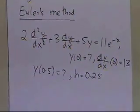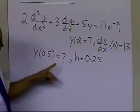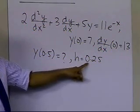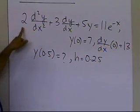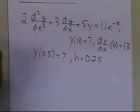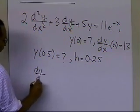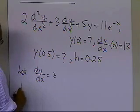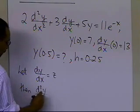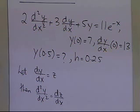We need to conduct two steps to find the approximate value of y at 0.5, because the first step takes us from 0 to 0.25, and the next step takes us from 0.25 to 0.5. Since we have a second-order differential equation, we must perform the substitution: let dy/dx equal z, so that the second derivative of y with respect to x is defined as dz/dx. This reduces the equation to coupled first-order differential equations solvable by Euler's method.